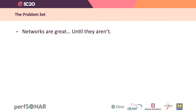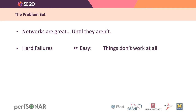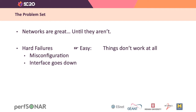The first category is hard failures, and those are pretty easy to spot because when they happen, things don't work at all. The types of things that cause hard failures are things like gross misconfiguration or an interface going down because, for example, someone pulled the fiber out of it. Those are usually really easy to spot because your network management system will alert you to it, or the device may even send out an alarm that says hey, something went wrong.